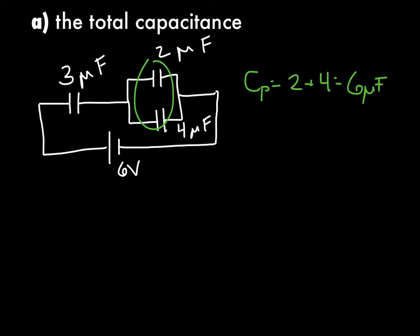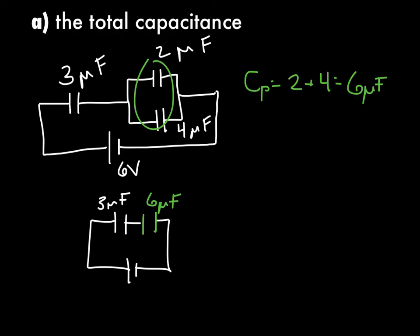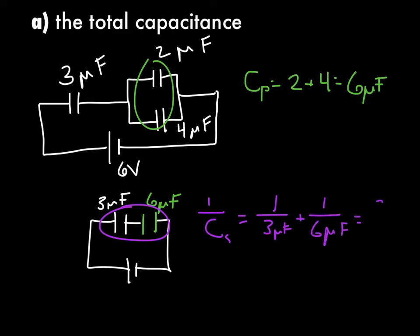Now redraw the circuit — do not forget to redraw, it makes things easier. These are now wired in series. 1/C series = 1/3 μF + 1/6 μF = 3/6. Remember this is 1/Cs, so take the reciprocal, and the total capacitance of this entire circuit is 2 μF.